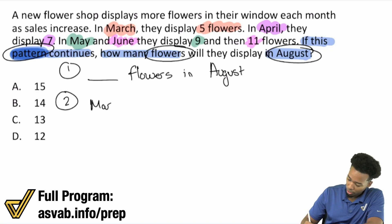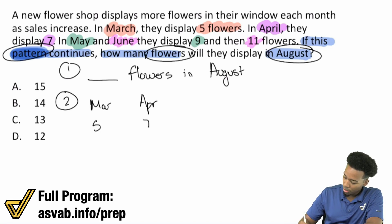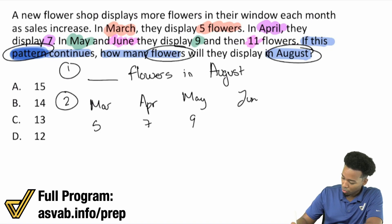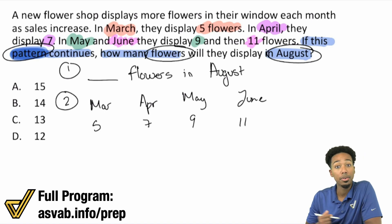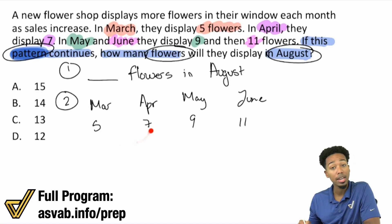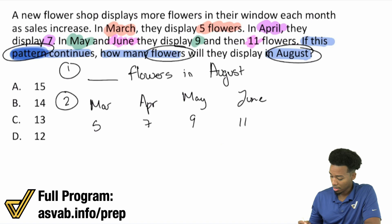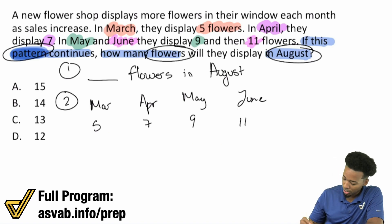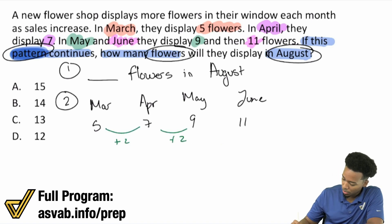So if I write that down: March we have five, April seven, May we have nine, June eleven. If you take a look here, what's the pattern? The pattern here is that we're adding by two. That's pretty clear to see. Plus two, plus two, plus two.